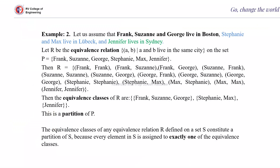Let us start with the second example on equivalence classes. The problem here is: Frank, Susanne, and Josh live in Boston; Stephen and Max live in Lubeck; and Jennifer lives in Sydney. Let R be an equivalence relation such that (a, b) means a and b live in the same city, on the set P = {Frank, Susanne, George, Stephanie, Max, Jennifer}.